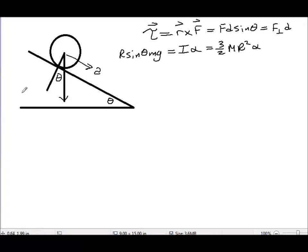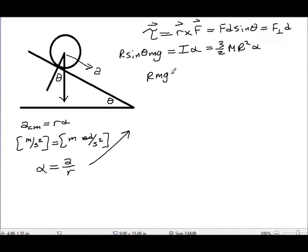For non-slip conditions, meaning that it's not sliding or static friction is acting, then a of the center of mass equals r alpha. Solving for alpha equals a over r. Plugging that in, R sine theta mg equals three halves m r squared a over r.